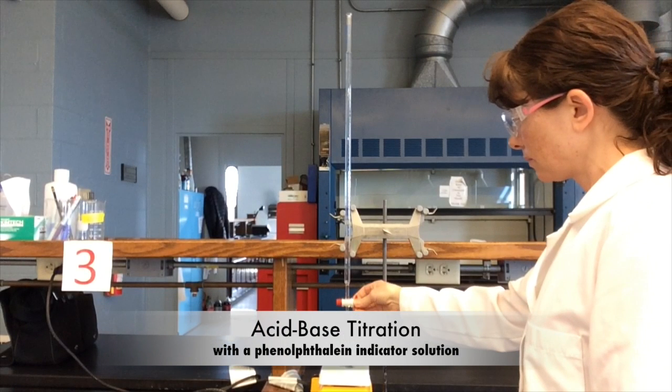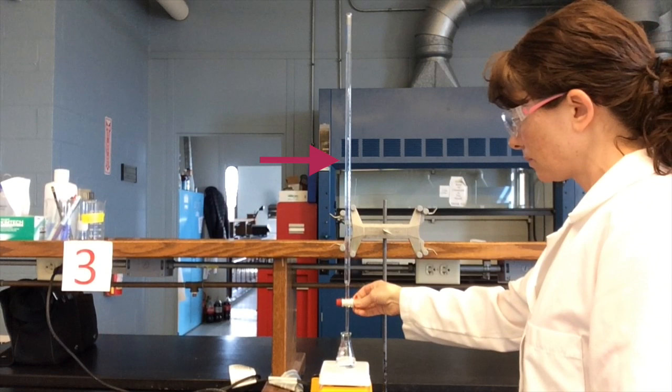This video will demonstrate how to perform an acid-base titration using phenolphthalein as the indicator solution. The types of glassware used in this titration are a burette and an Erlenmeyer flask.